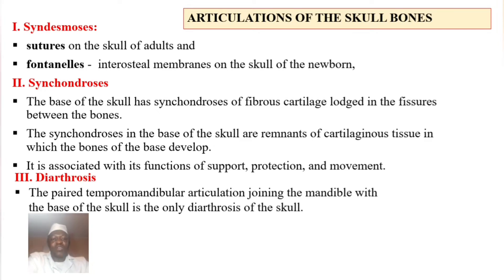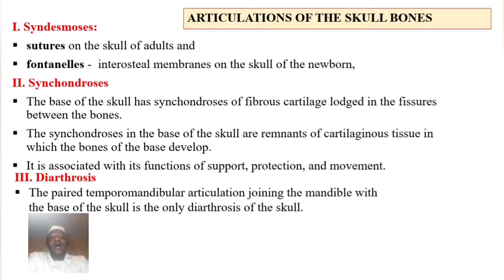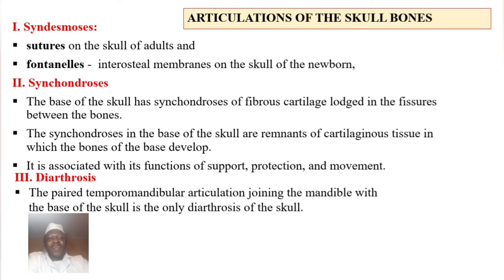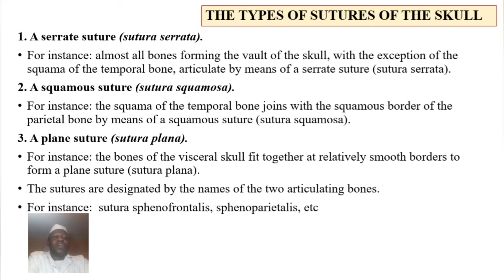We will talk more about fontanels towards the end of this video. Synchondrosis in the base of the skull consists of fibrous cartilage lodged in the fissures between the bones — remnants of cartilaginous tissue from which the bones of the base of the skull develop. These are associated with the functions of the base of the skull: support, protection, and movement. There is only one true joint, diarthrosis, which is the paired temporomandibular joint.